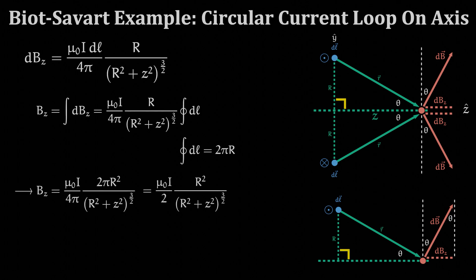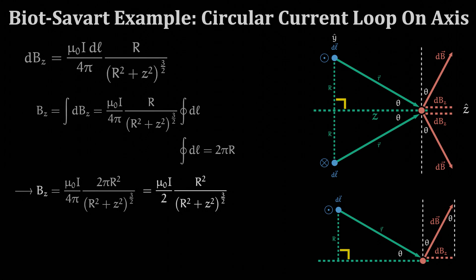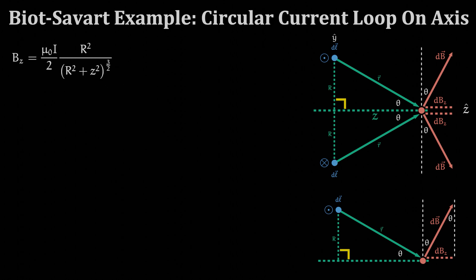This is the z component of the B field produced by this circular current loop for any point along the central or z axis. In the previous video we calculated the B field at the center of the loop which would correspond to z equals zero for us in this problem.